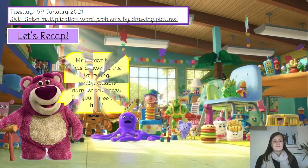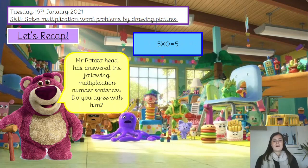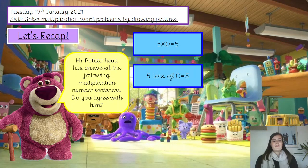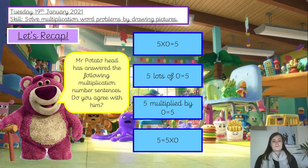Okay, let's recap. Mr Potato Head has answered the following multiplication number sentences. Do you agree with him? You don't need to write anything in your book for this. You can talk to your talk partner if you're in school, or an adult if you're working at home. If you're working on your own, just have a little think. So: 5 times 0 equals 5; 5 lots of 0 equals 5; 5 multiplied by 0 equals 5; and 5 equals 5 times 0. Pause the video and decide — do you agree with Mr Potato Head? Are these answers correct?